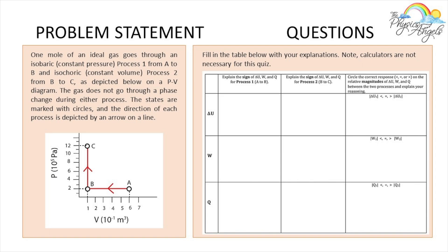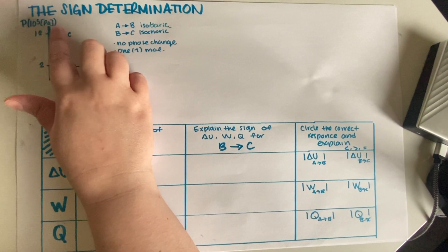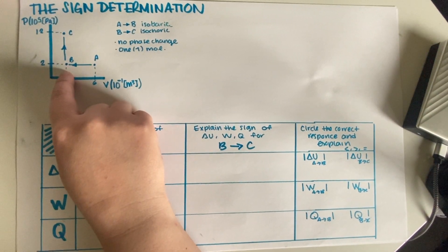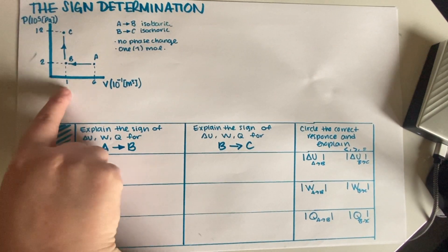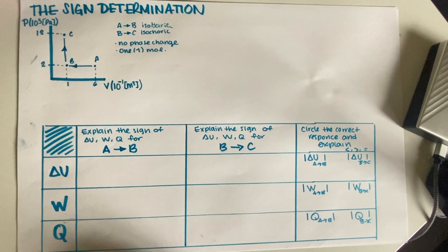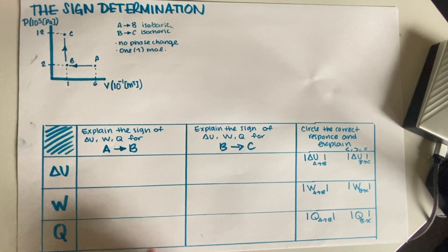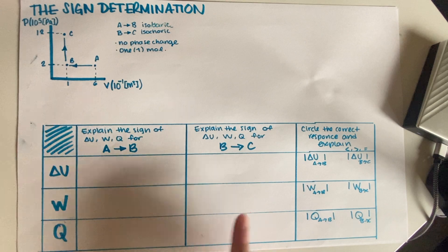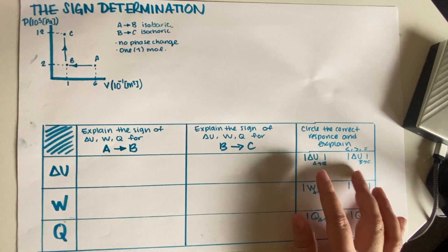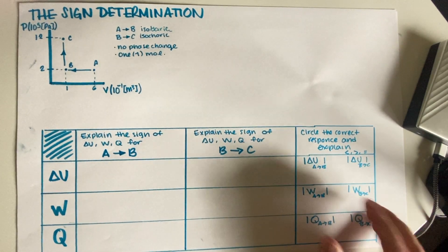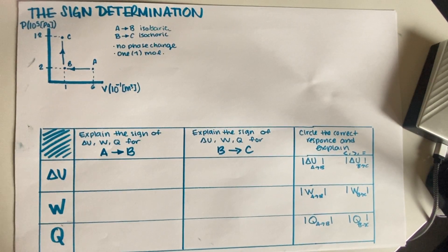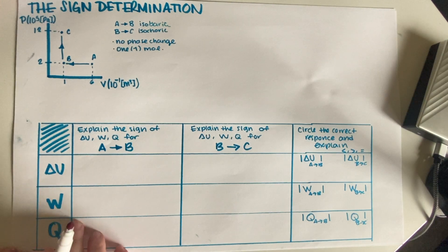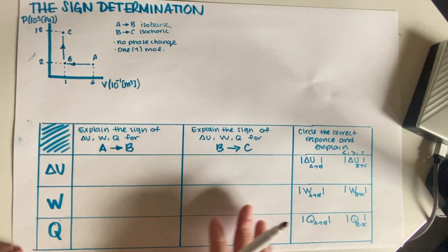So we have our two processes: A to B and B to C. A to B is an isobaric process because the pressure is kept constant at 2, and B to C is isochoric because the volume is kept constant at 1. Basically what we have to do is explain the sign — plus, minus, or zero — and then compare both processes and explain. Let's go ahead and start with A to B in order.